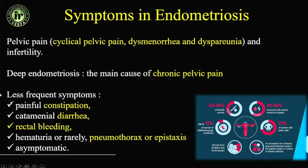Deep pelvic endometriosis can cause chronic pelvic pain, and it's important to know that symptoms may be unrelated to the menstrual cycle. Painful constipation, catamenial diarrhea, rectal bleeding, pneumothorax, and epistaxis have also been described. Whatever these symptoms are, they will be cyclical — just asking the patient whether symptoms are cyclical will reveal a correlation.